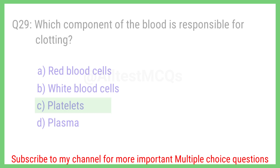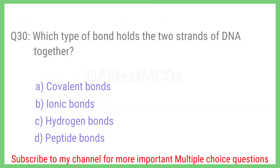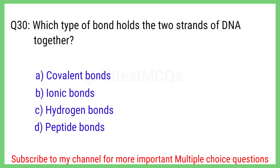Question number 30. Which type of bond holds the two strands of DNA together? The right answer is option C. Hydrogen bonds.